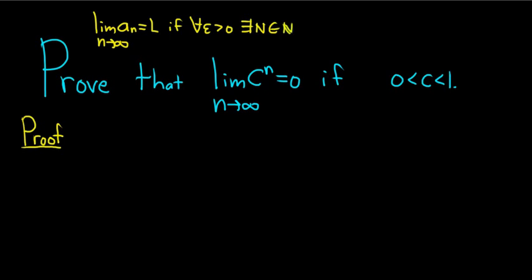such that for all little n bigger than capital N we can make the distance between a sub n and l very small. So how small? Well as small as we like, so less than epsilon for any positive number epsilon. This distance can be arbitrarily small because epsilon can be super small.